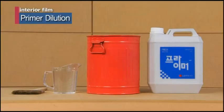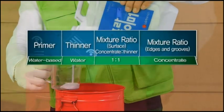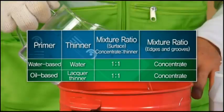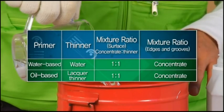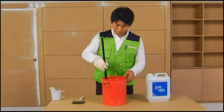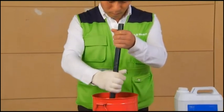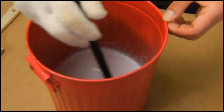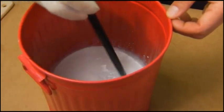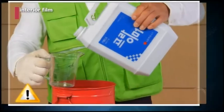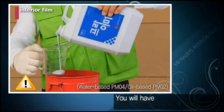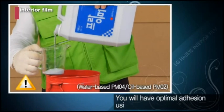After sanding, you should dilute the primer. Mix the primer and thinner at a 1 to 1 ratio and stir well with a stick. Water is used as a water-based thinner and lacquer thinner as an oil-based thinner. You will have optimal adhesion using LG Hausis' primer.